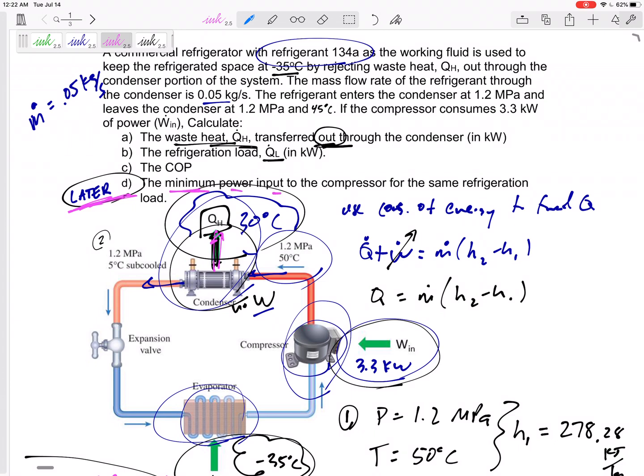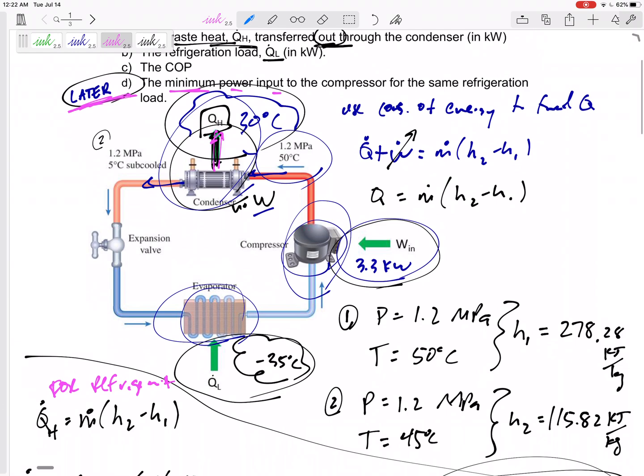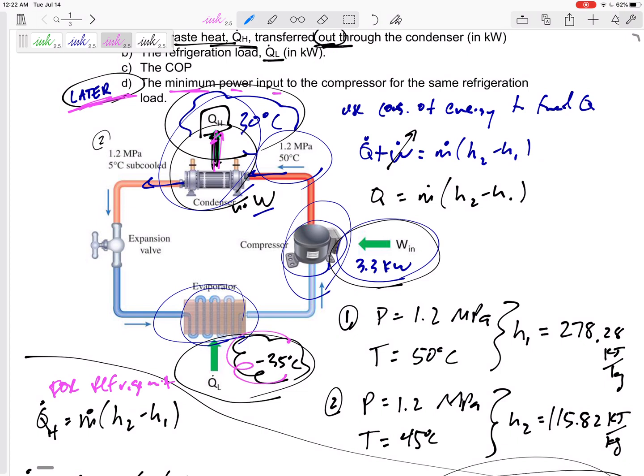What if this was the best? What if this was a Carnot refrigerator, and what would the minimum power input be to the compressor for the same refrigeration load if it is going from negative 35...